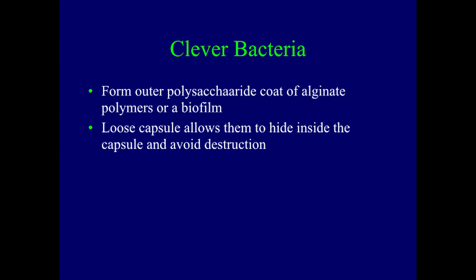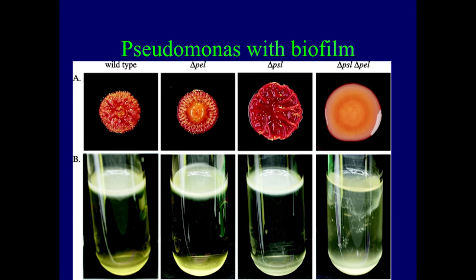Here's a picture of different Pseudomonas cultures — what they look like on a culture plate and in a test tube. In the wild type, the colonies look rough, and there's no alginate coat. Going progressively to the right, you see more alginate coat, and finally something totally covered in slime — an orangey-yellow slime over all the bacteria. In the growth medium you can see this slimy compound floating in and out of solution. That's a biofilm.